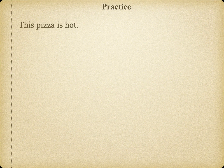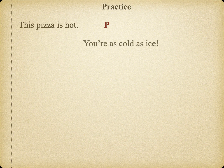Now for a little bit of practice. The statement 'this pizza is hot' is a simple proposition. We look to the subject, which is the word 'pizza,' so to symbolize this statement it simply becomes P. Pizza is the subject term, so we take the letter P and let it represent the whole proposition. 'You're as cold as ice' — again, a simple proposition. This one becomes Y, representing the whole statement.